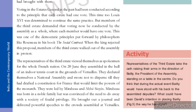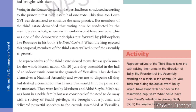The representatives of the third state viewed themselves as spokespersons for the whole French nation. On 20th June, they assembled in the hall of an indoor tennis court in the grounds of Versailles. They declared themselves a National Assembly and swore not to disperse until they had drafted a constitution for France that would limit the power of the monarch.